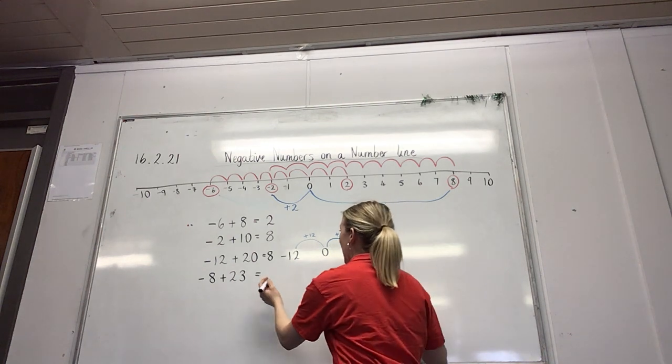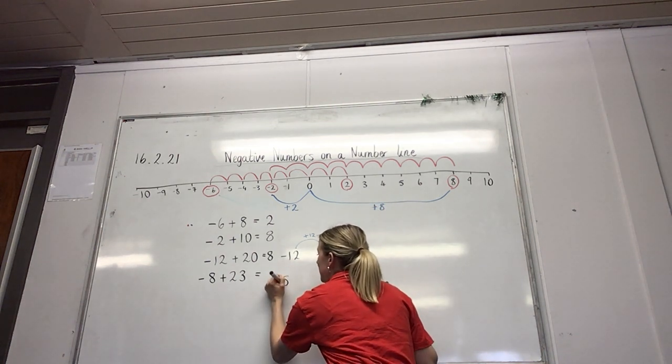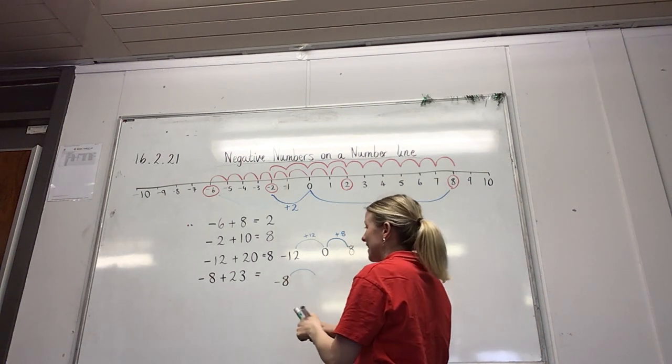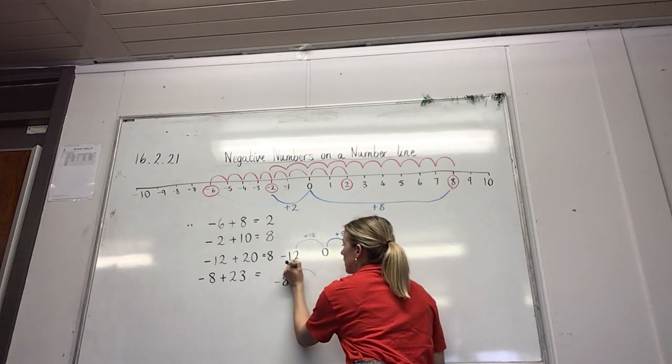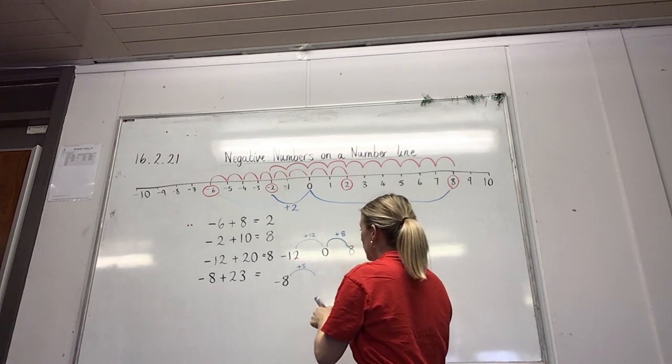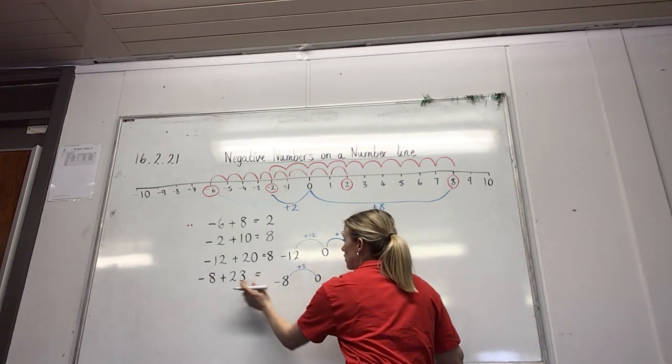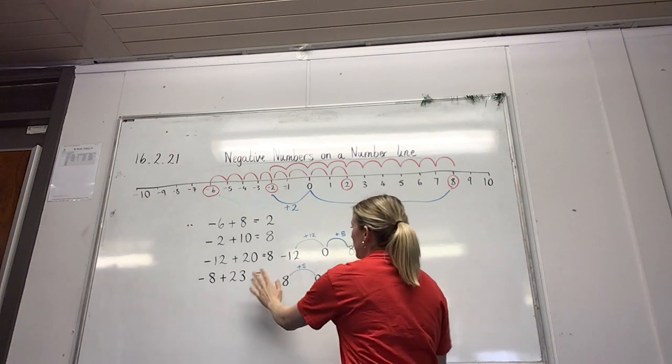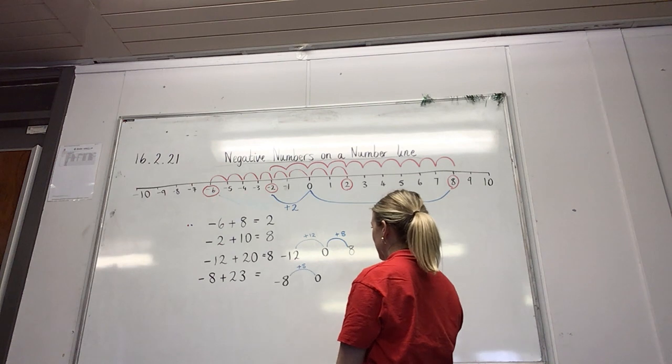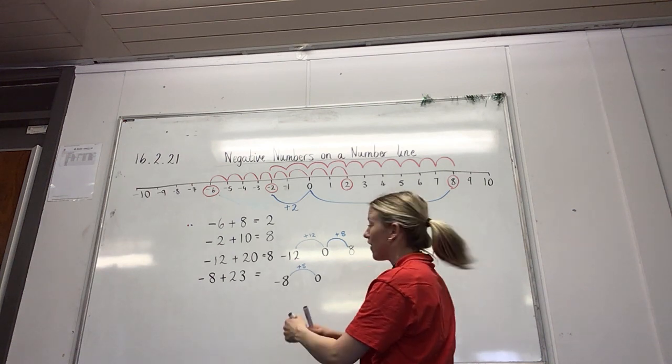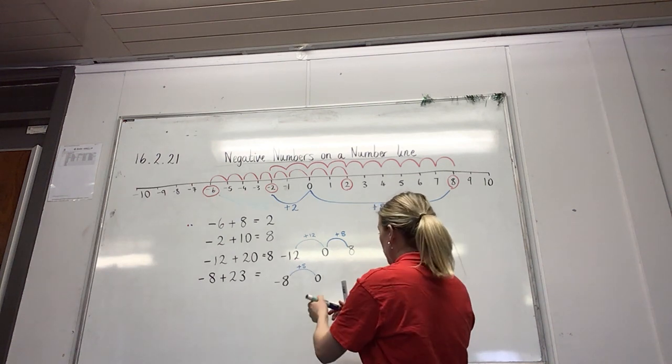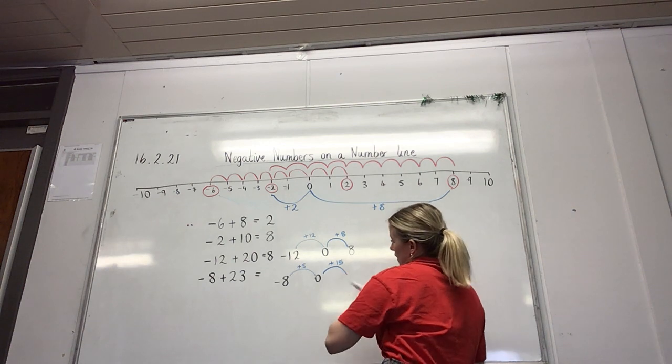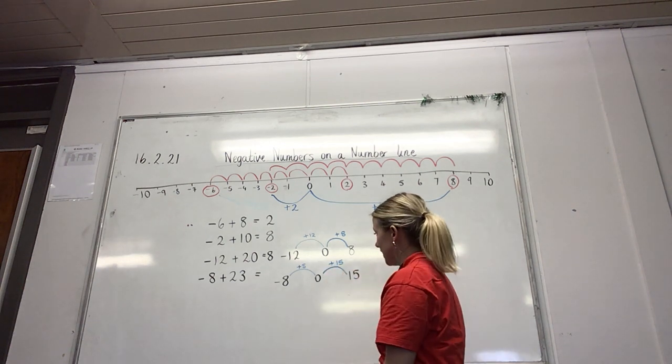Let's try it for this one down here. Minus 8 add 23. Well, minus 8, how many will I need to add to get me to 0? Well, minus 8 add 8 gives me 0. So I'll add on 8, and that takes me to the 0. But I don't only want to add 8, I want to add 23. So perhaps I could add on another 10. Or what's the difference between 23 and 8? Let me just think. 23 take away 8 gives me 15. So I could do 0 add 15. And my answer is, well, 0 add 15. Easy peasy. My answer is 15.